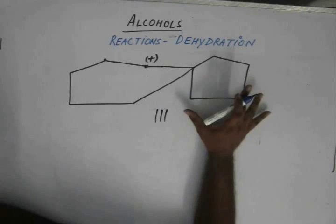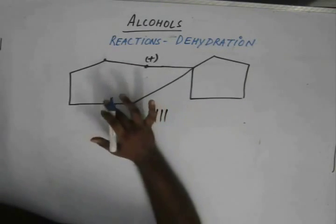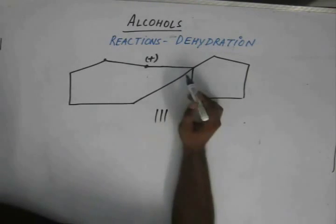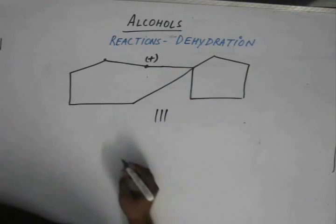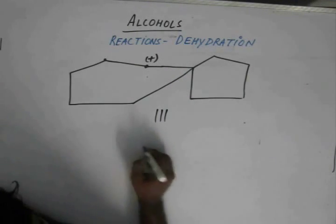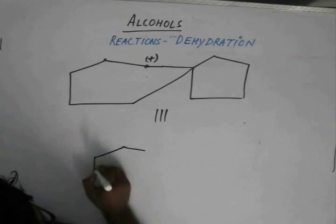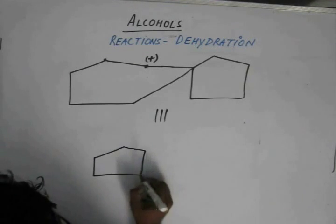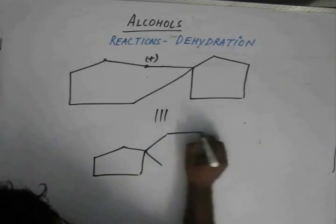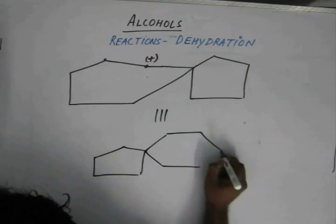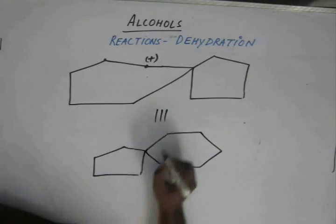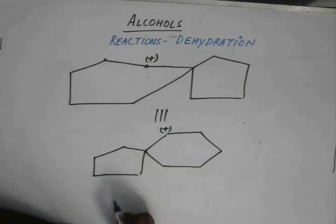To a five-membered ring, a six-membered ring is attached. We call this compound ring as spiro compounds. To a five-membered ring, a six-membered ring is attached with a plus charge over here.